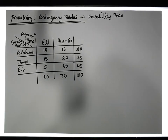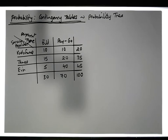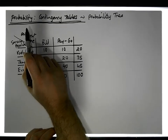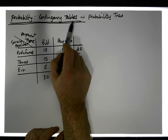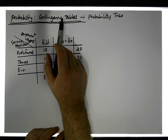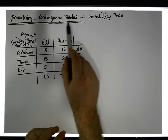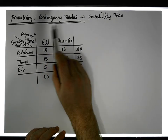Hi guys, this is Jonathan Lambert with the Mathematics Development and Support Service at National College of Ireland. In this short video, another video dealing with probability, concentrating on contingency tables and in particular how to produce probability trees from a contingency table.